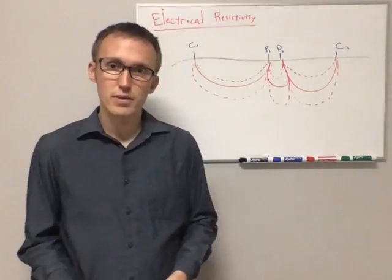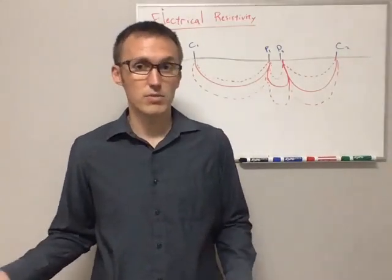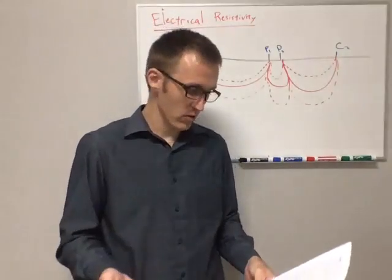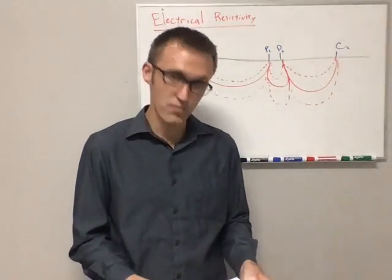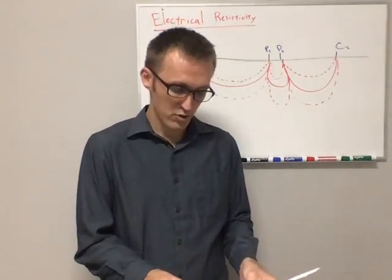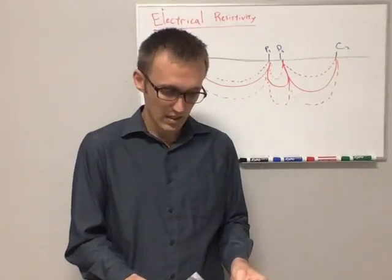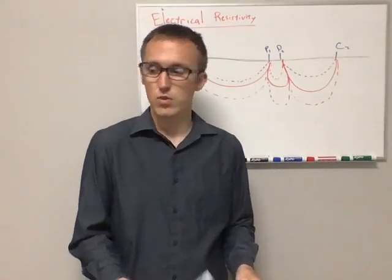Resistivity is also useful because geological materials have very widely varying resistivities, anywhere from silver on one end of the spectrum at 10 to the minus 8 ohm meter resistivity, so very conductive material, all the way up to pure sulfur which has 10 to the 16 ohm meters.